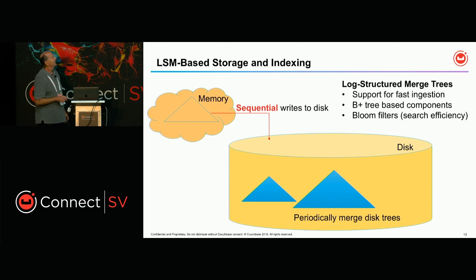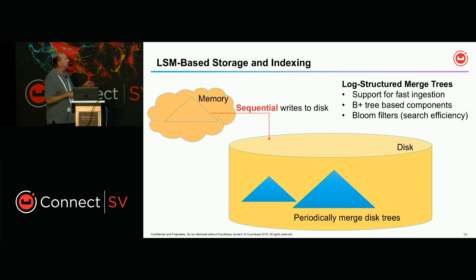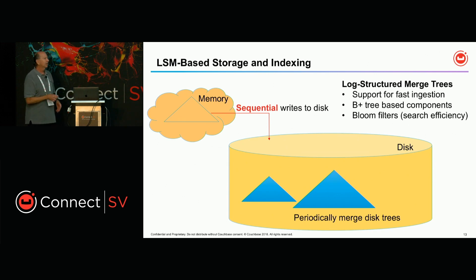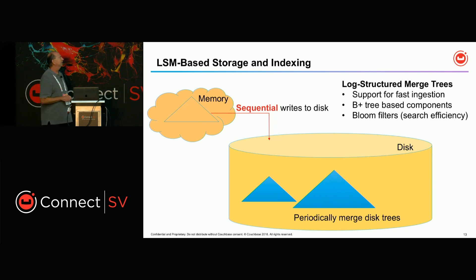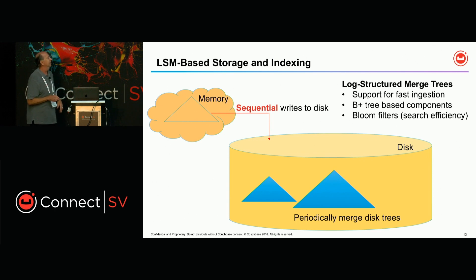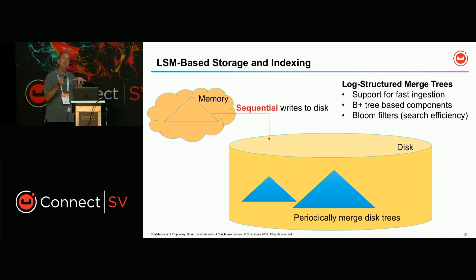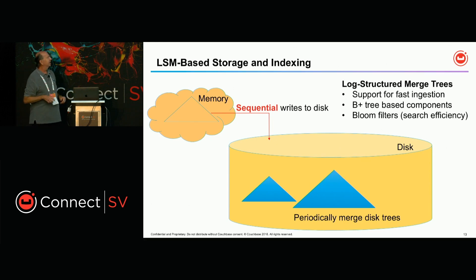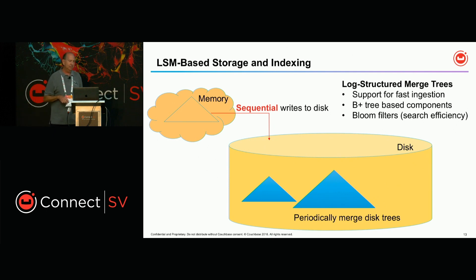Under the hood, each LSM component is a familiar B-tree, but it gets written once — components are immutable, and as compact as possible B-tree-wise. For search efficiency, the primary index also has a bloom filter — a bit vector where you can check whether a record might be in that component and avoid searching if it's not. That's a quick view of LSM-based storage on one I/O device.